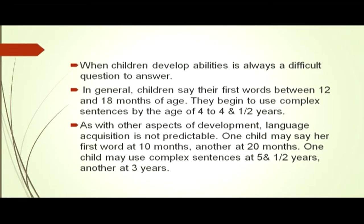When children develop abilities is always a difficult question to answer. In general, children say their first words between 12 and 18 months of age and begin to use complex sentences by the age of 4 to 4 and a half years. Language acquisition is not predictable — one child may say her first words at 10 months, another not until 20 months; one may use complex sentences at 5 and a half years, another at 3 years. There should be no comparison between different children, as all children learn language at their own individual capacities and rates.